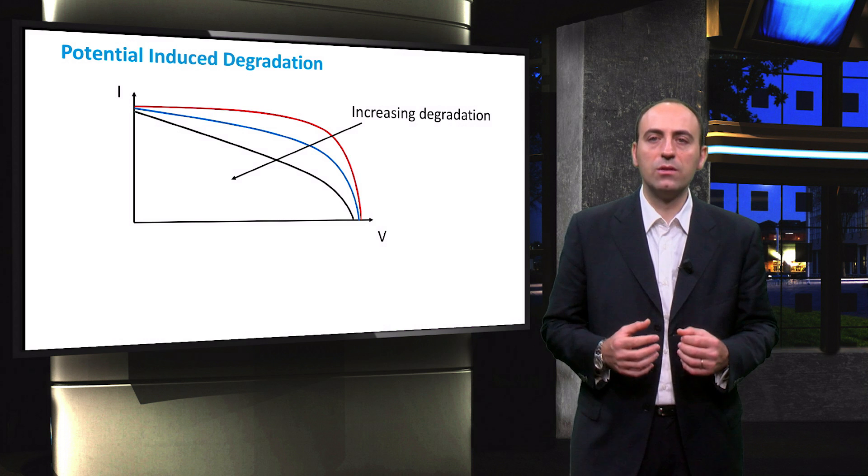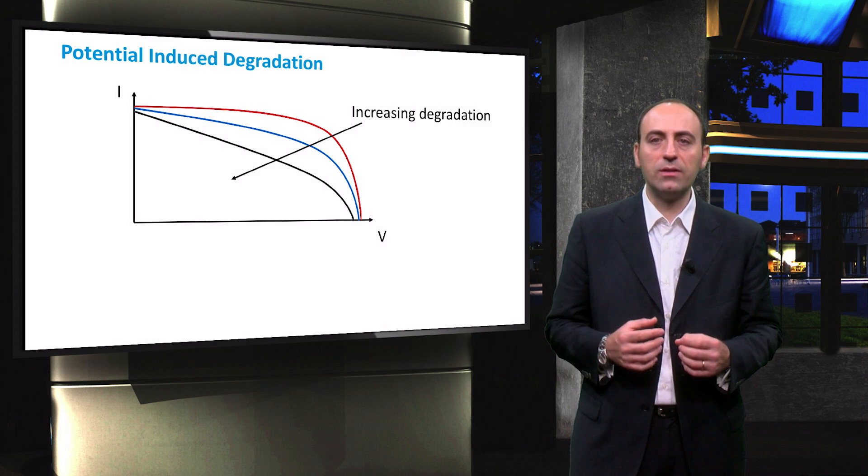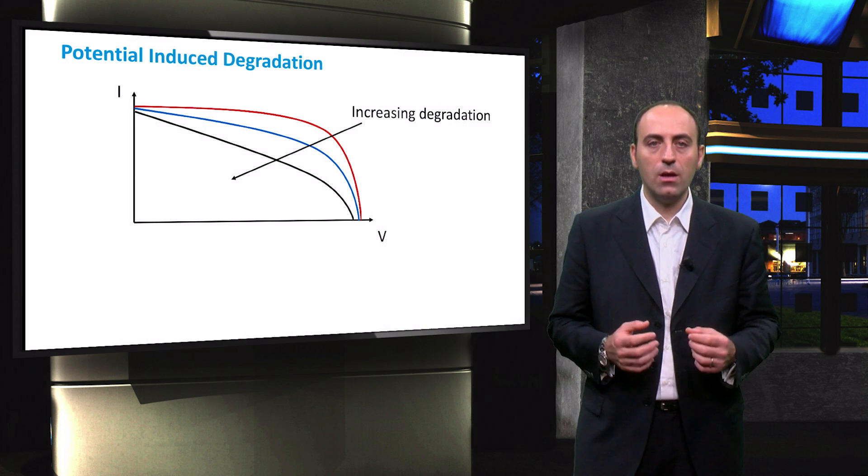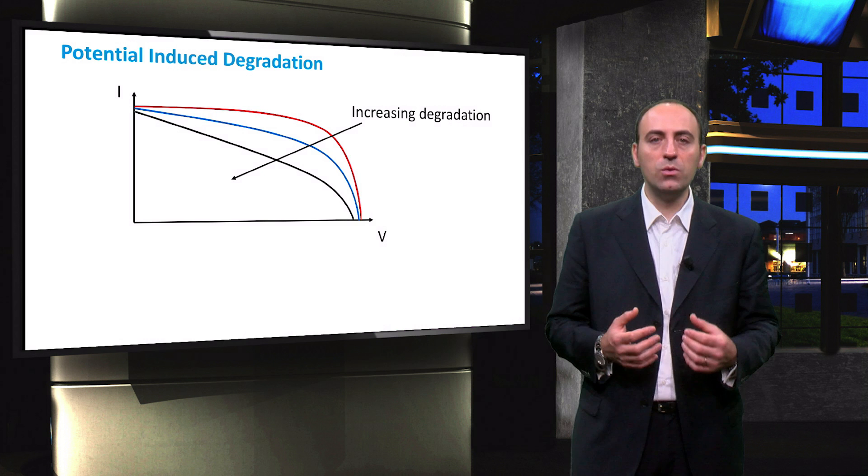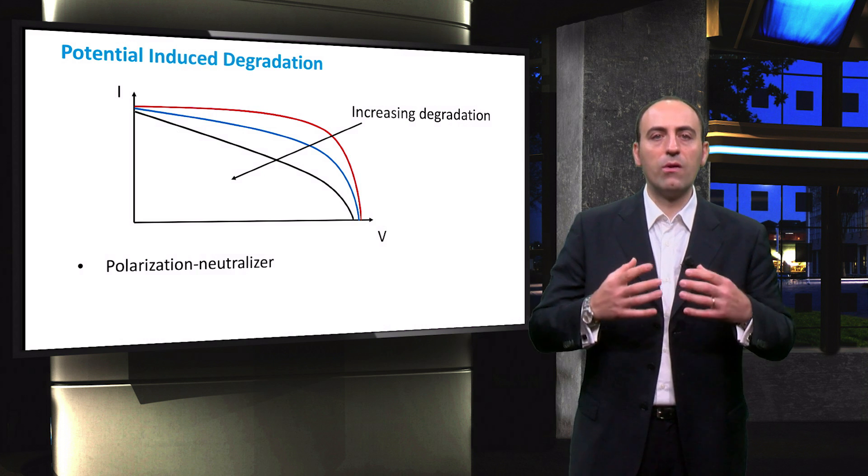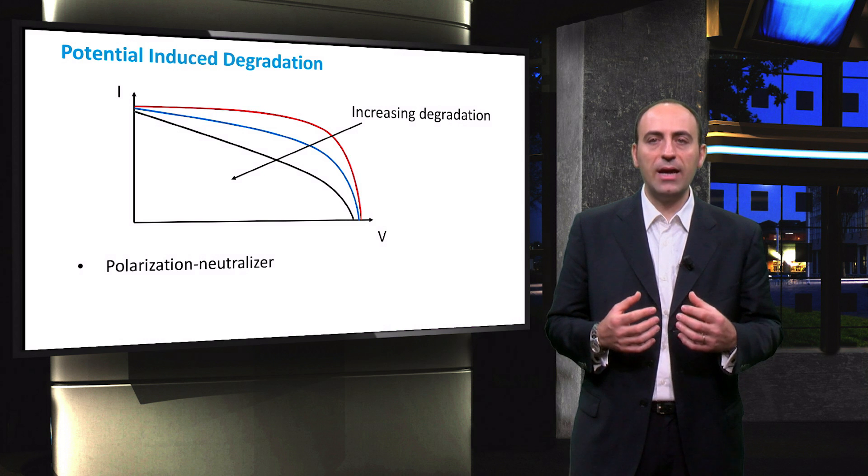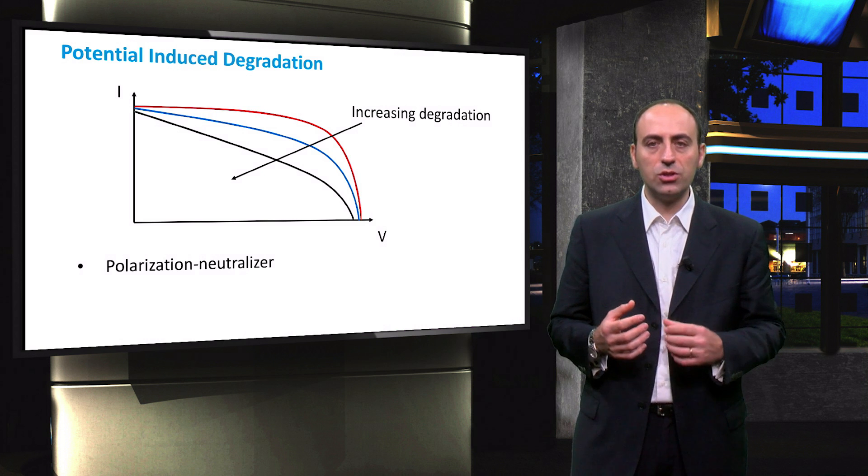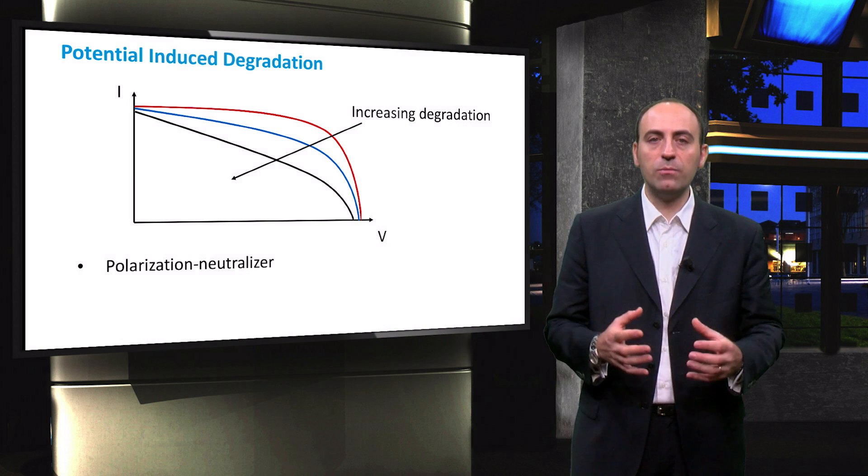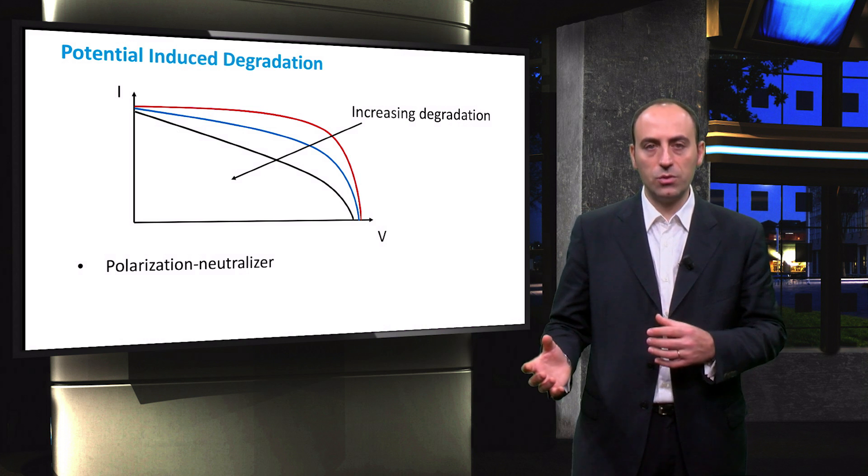The open circuit voltage and the short circuit current remain nearly unchanged, but the maximum power point can be reduced up to 70%. There are different ways of reducing the PID. One method is to use a polarization neutralizer that applies a reverse voltage to the affected pole overnight. This solution is preferred when the array cannot be grounded because of the inverter chosen.